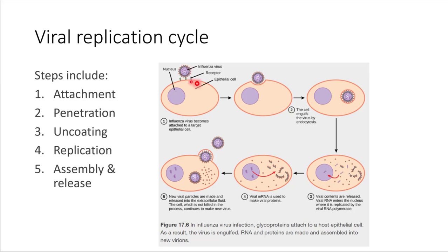Sometimes just this binding is enough to trigger endocytosis by the cell, so the virus particle gets taken inside. Endocytosis has happened — now it's inside. The next step is for the virus particle to sort of get unwrapped. There are all these layers we talked about that have to be disassembled in order to free the genome, which has the instructions for making viral proteins. This is called uncoating. The virus particle essentially comes apart and the genome is then available.